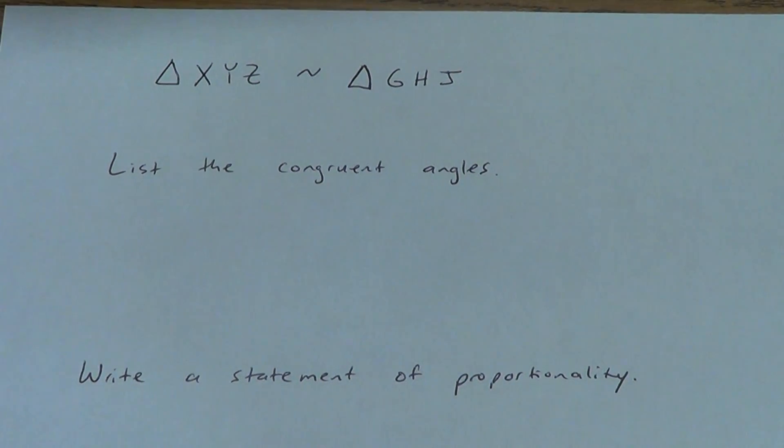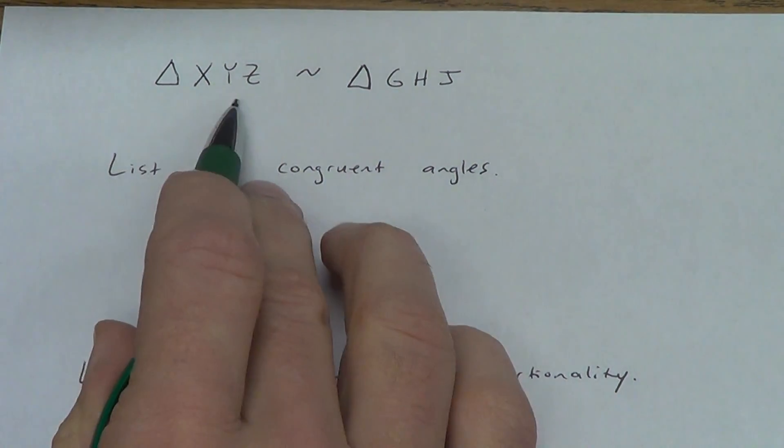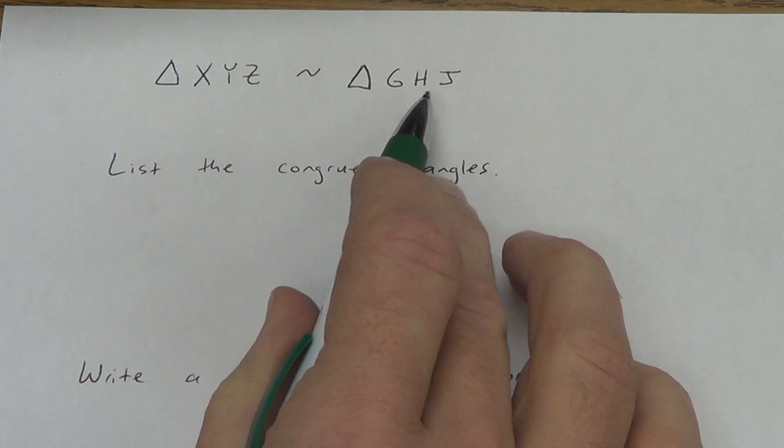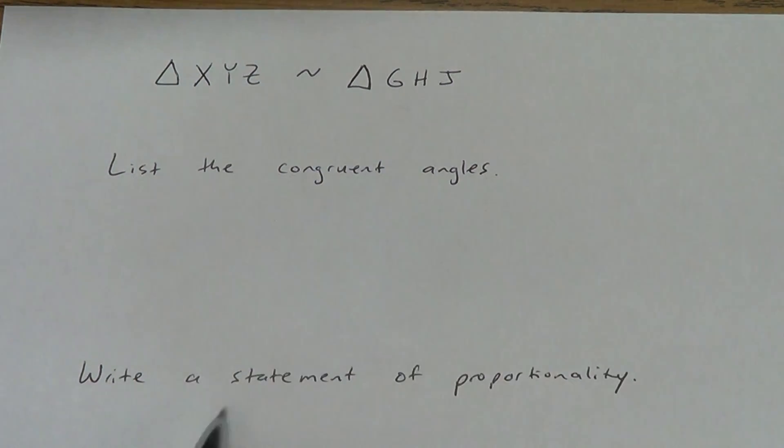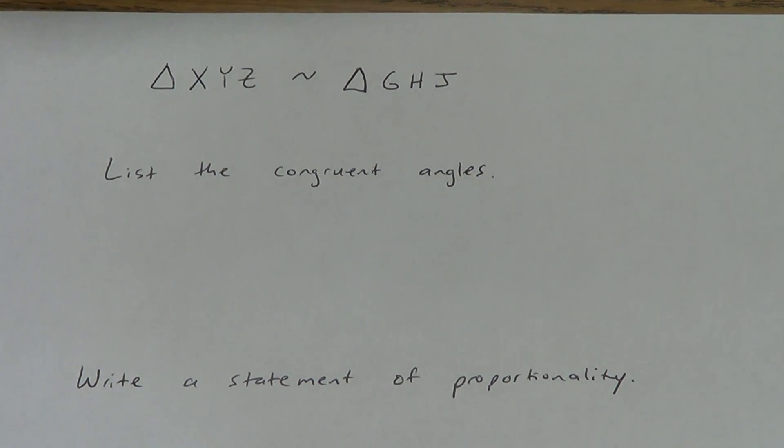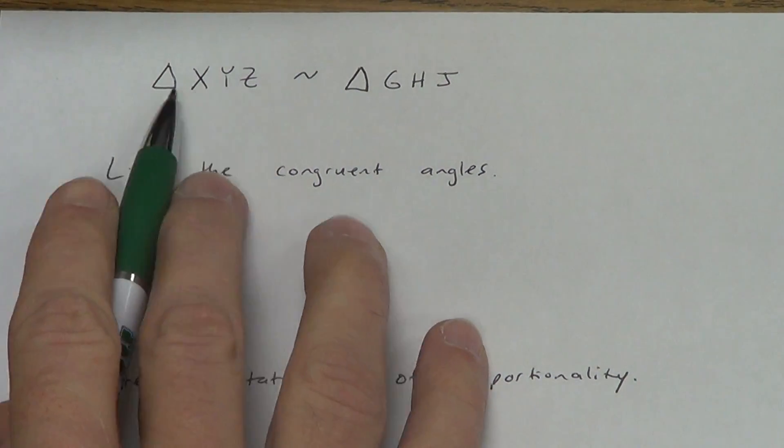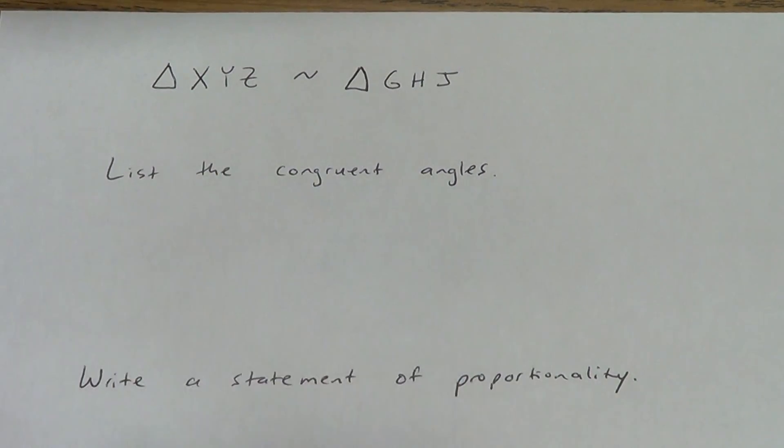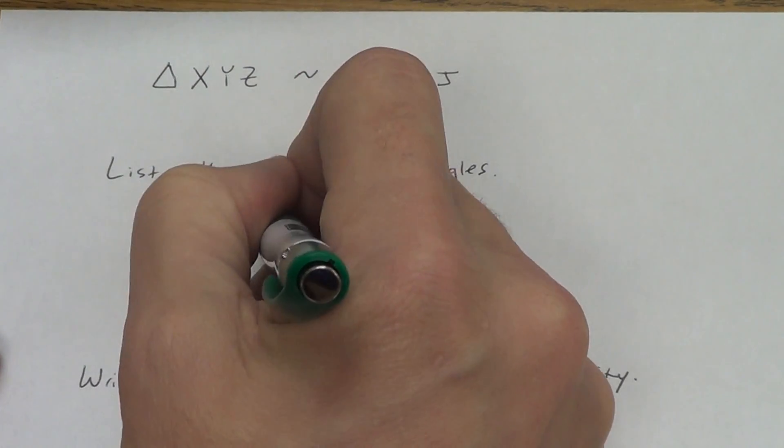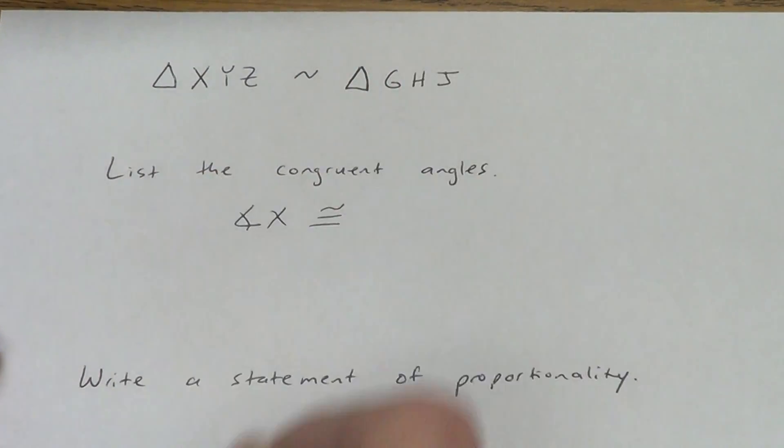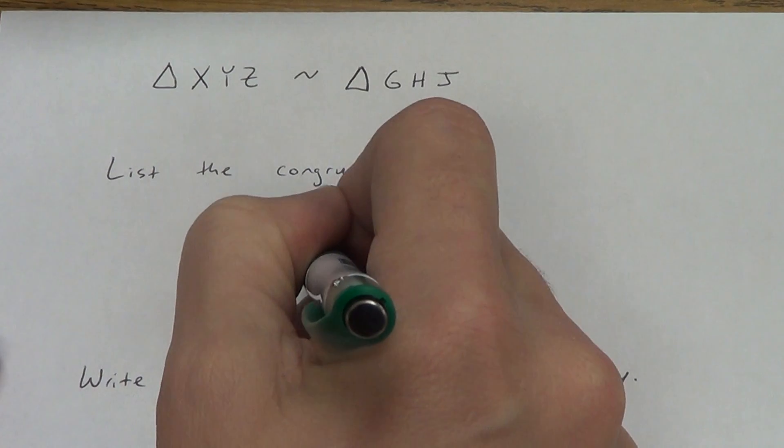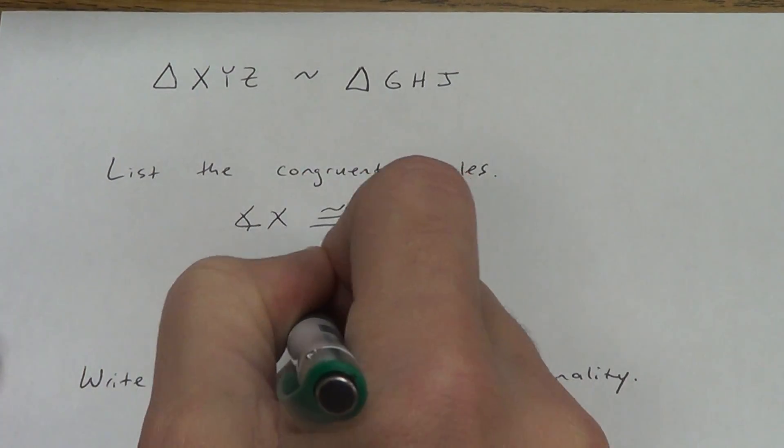Remember how I talked to you about that thing called a statement of proportionality? I want to make sure I give you an example of that. Triangle XYZ is similar to triangle GHJ. We're going to first list the congruent angles. And then we're going to write a statement of proportionality. Copy this down real quick. We're going to do these two. And we're going to be done with Lesson 6.1.